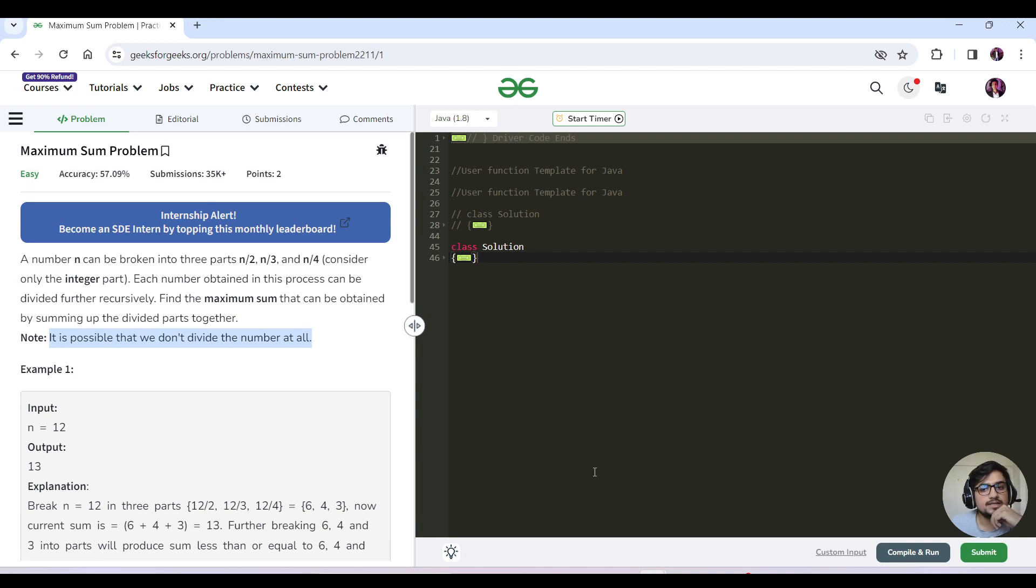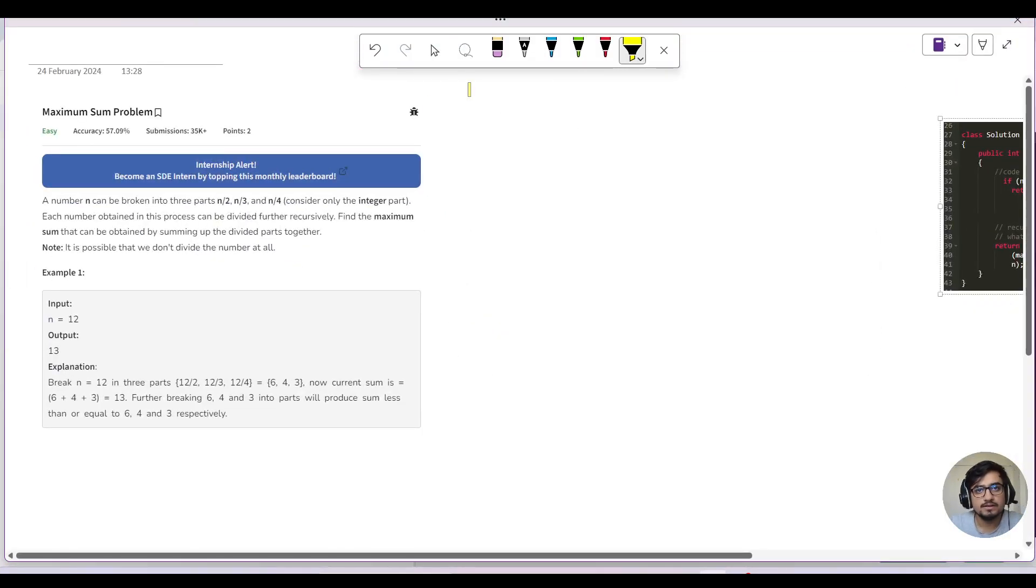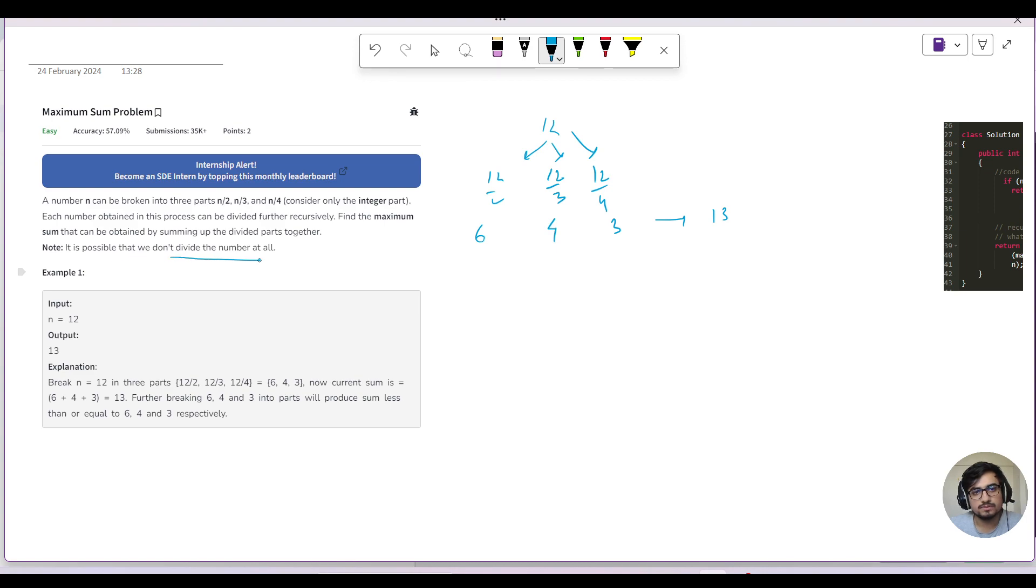So this note means that let's say we have 12, right? So 12 could be divided in three parts: n by 2, that is 12 by 2, 12 by 3, and 12 by 4. This will give you 6, this will give you 4, and this will give us 3. If we sum it, it is 13, right? So the note says it is possible that we do not divide the number at all. It means our initial number was 12 and after dividing we get 13. So in these two, we have to return it. If there is a case after division, let's say it was 12, and we have something less than 12, definitely we will not do division and we will take our number. But in this case, we have 13 here, so we will divide it.